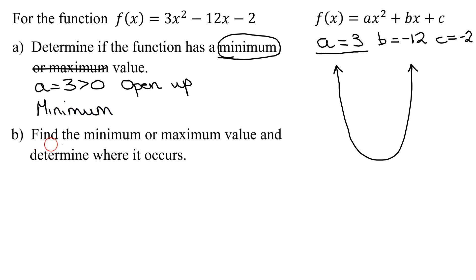In part B, we need to find the minimum or maximum value and determine where it occurs. So remember, I'm finding the minimum value. The name of this point here, remember, this is the vertex of the parabola, and I need to find its x and y coordinates. Well, to find the x value of the vertex, you need to know a formula, x equals negative b over 2a.